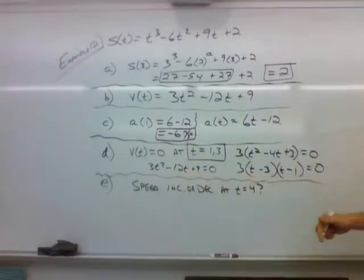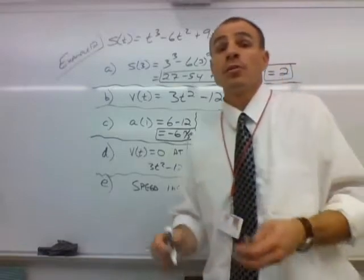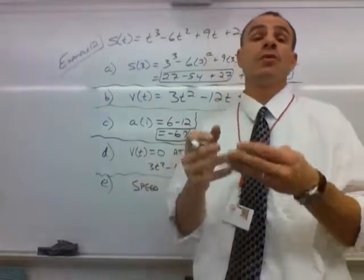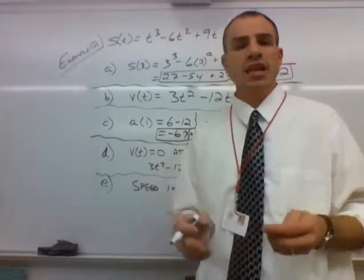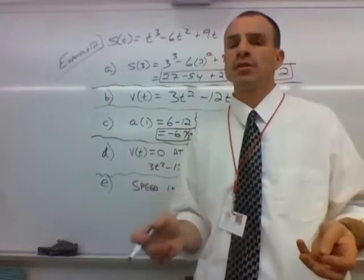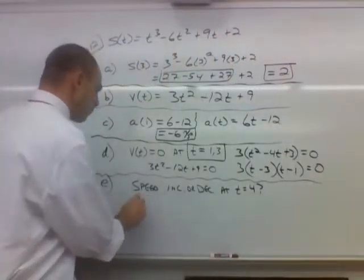Last but not least, we are interested in figuring out whether the speed is increasing or decreasing at t equals 4. So we have to plug 4 into both the velocity and the acceleration and look at their signs. Same sign means the speed is increasing. Different signs means the speed is decreasing. So let's check that out. We want v of 4.